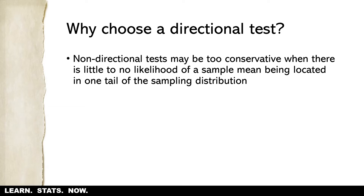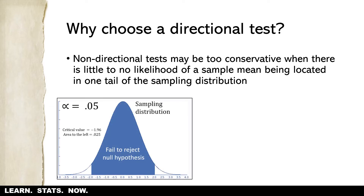We know the mean and standard deviation of happiness in the population, and then we expose a sample to 20 minutes of playing with adorable young puppies. We'd have a sampling distribution of happiness in the population with the z-score at zero, and if we're running a two-tailed test the regions of rejection would be located on the left and the right, split evenly at 0.025. But here's the problem: it's pretty inconceivable that playing with puppies for 15 to 20 minutes is going to make people extremely unhappy.